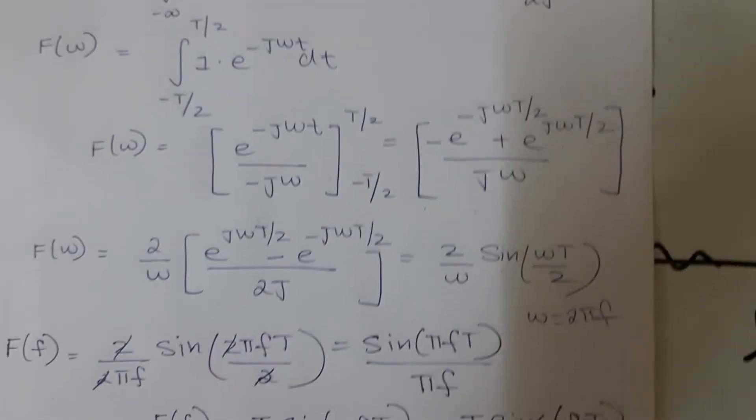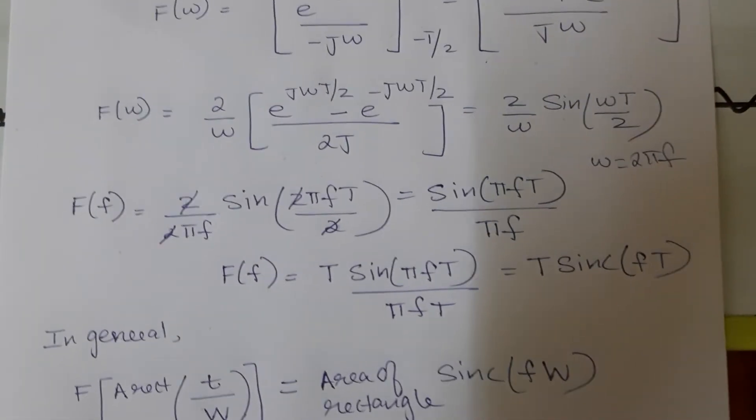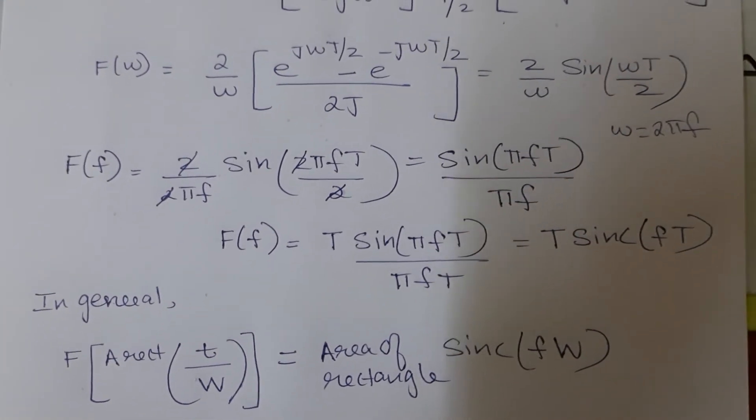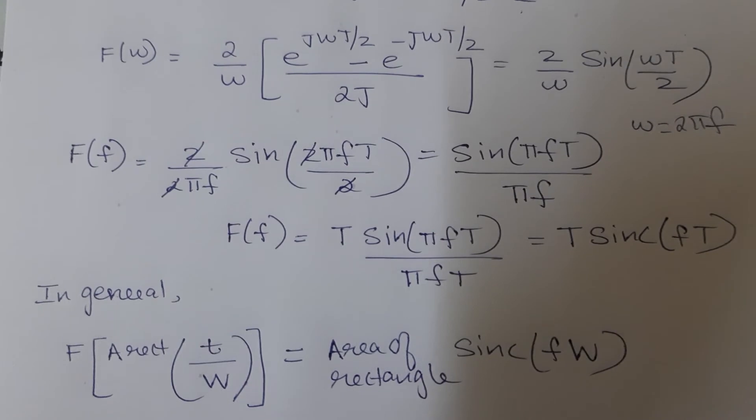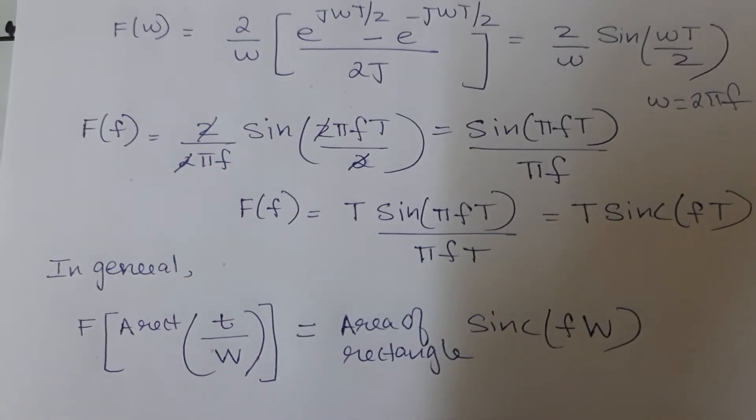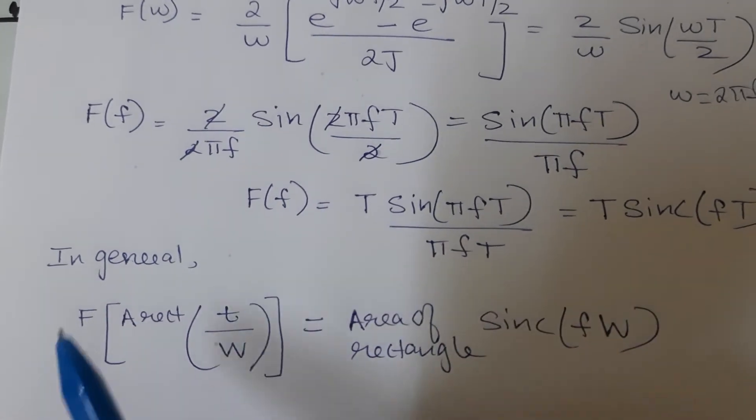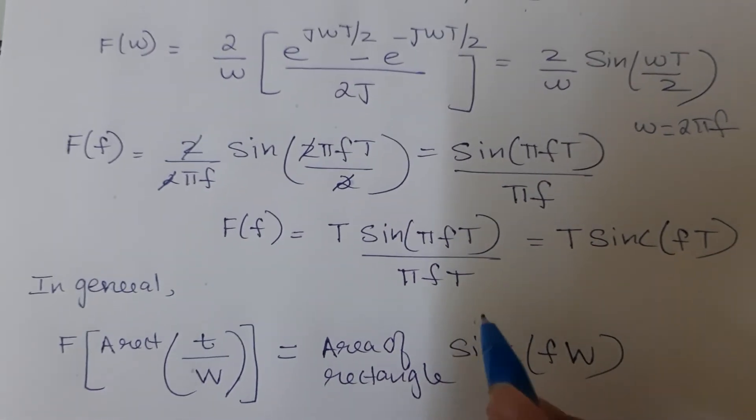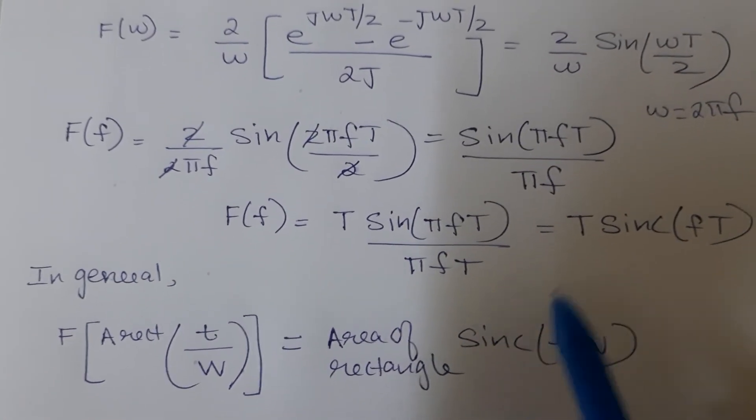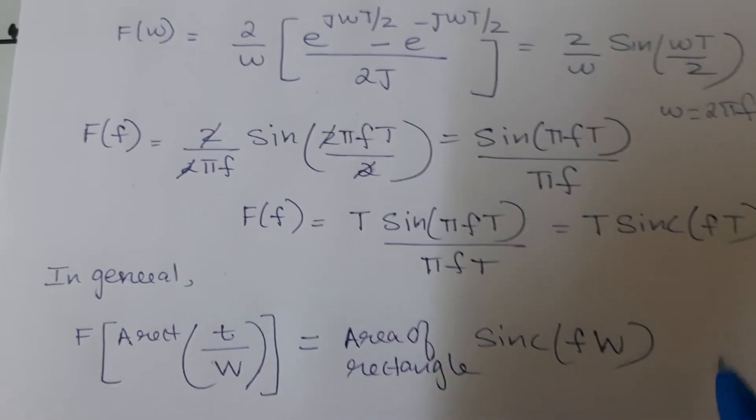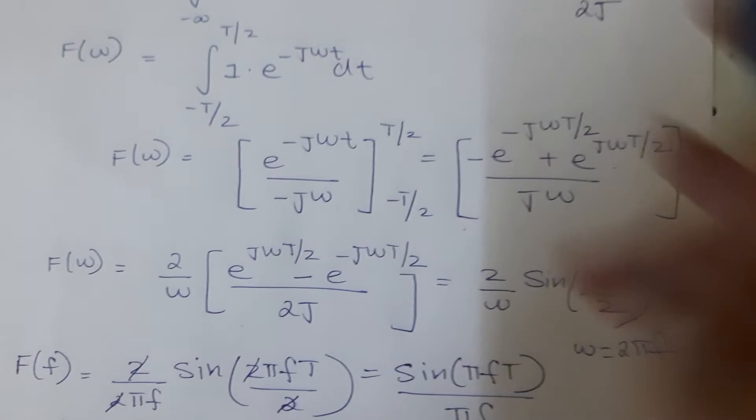Now let me generalize this expression for you. Whenever I have a rectangular pulse of amplitude a and of width w, the Fourier transform will be area of the rectangle into sinc of f into the total width w. Same thing can be proved here.